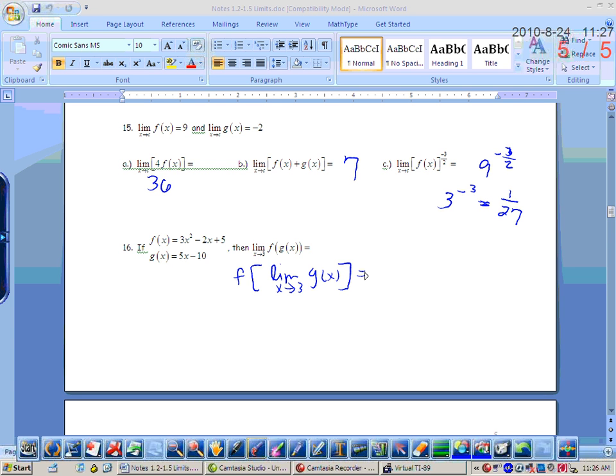Alright. So the limit as x approaches 3 of g of x is what? 5. So therefore, f of 5 is 3 times 25 minus 10 plus 5. 70. Okay, that's a good question. How do you know that the f function is continuous? Any polynomial function is always continuous. So that's a polynomial function, so you know it's continuous. So I kind of started with an easier example. But that's a good question.